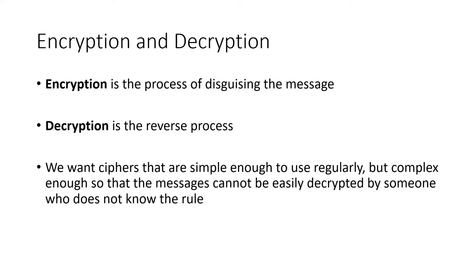Rather than disguising and un-disguising, we use the terms encryption and decryption. Encryption means disguising the message; decryption is the reverse process — the un-disguising. This word 'reverse' is really important: we want to make sure our cipher can be undone. We want a cipher that's simple enough to use regularly, but complicated enough so that messages cannot be easily un-disguised by somebody who doesn't know the rule.